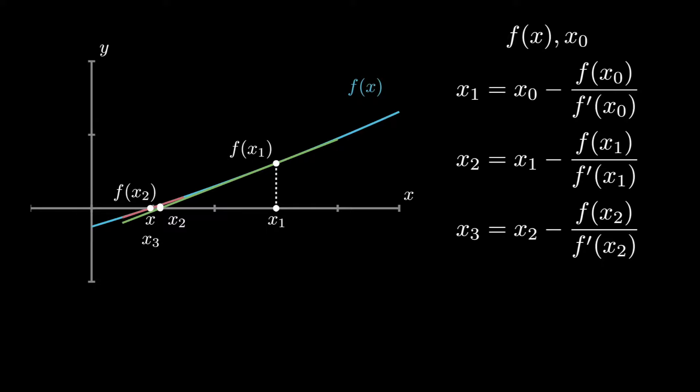The general formula as given by Newton and Raphson to further continue the iteration is x_{n+1} is equal to x_n minus f(x_n) over f'(x_n).